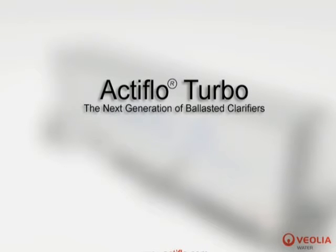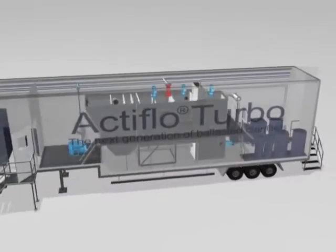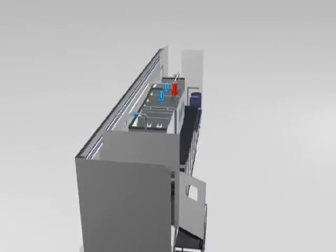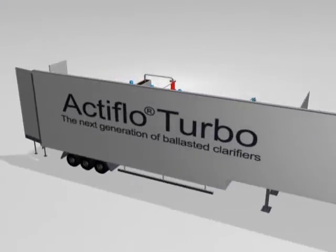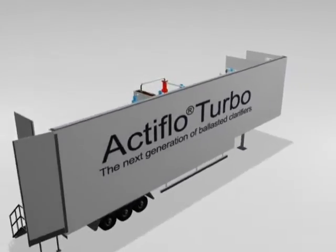Active Flow Turbo for Drinking Water and Process Water Treatment. Active Flow Turbo is a compact water clarification process in which water is flocculated with microsand and polymer in a turbomix reactor.